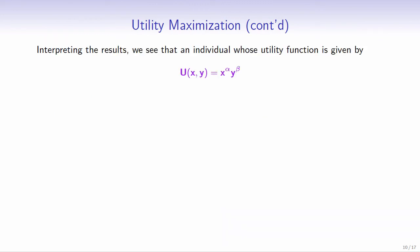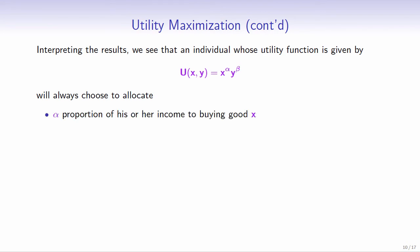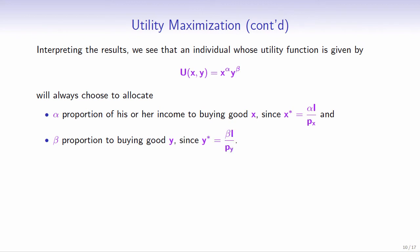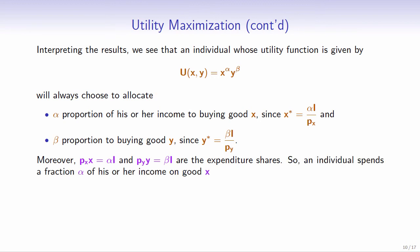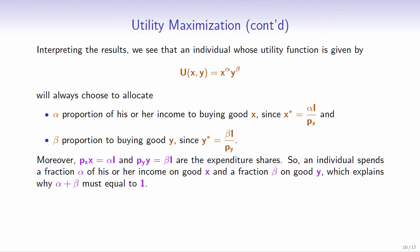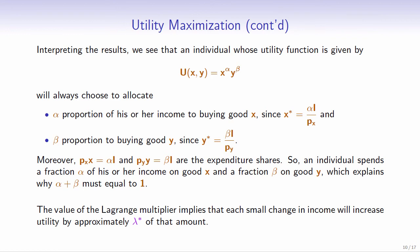Interpreting the results, an individual whose utility function is x^alpha times y^beta will always choose to allocate alpha proportion of income to buying good x, since x equals alpha times income over the price of good x, and allocate beta proportion to buying good y, since y equals beta times income over the price of good y. Moreover, alpha times income and beta times income are the expenditure shares of goods x and y respectively, which explains why alpha plus beta must equal 1. The Lagrange multiplier implies that each small change in income will increase utility by approximately lambda of that amount.